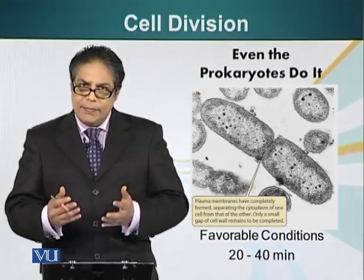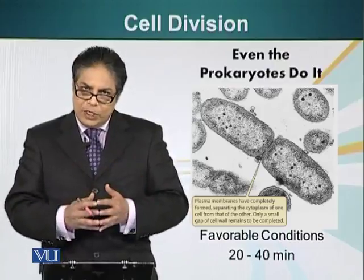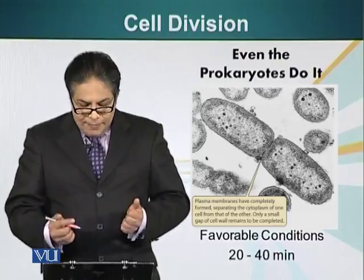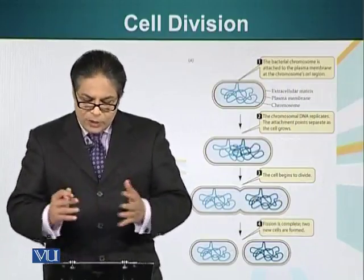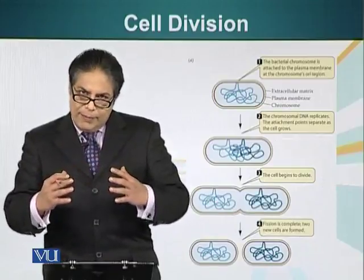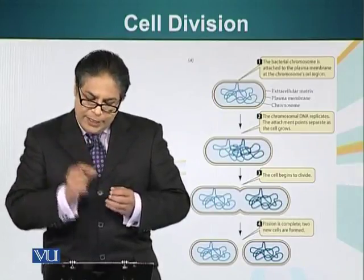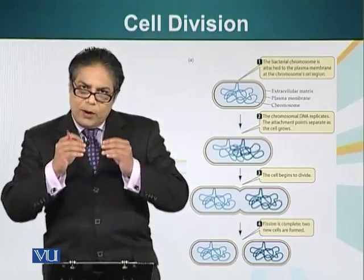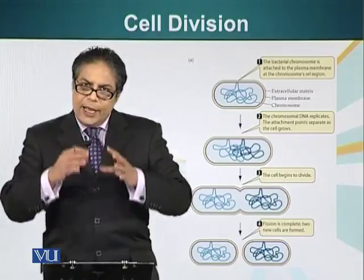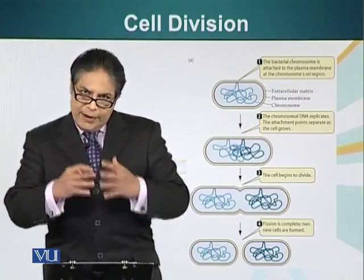Bacterial cells can divide as long as they have favorable environmental conditions. So as long as you provide bacteria with food, they will keep on dividing. Let's look at this process. A special part of the membrane attaches to the bacterial DNA — that's where a special sequence of DNA is. This special sequence of DNA is the origin sequence, and that's where DNA replication starts.